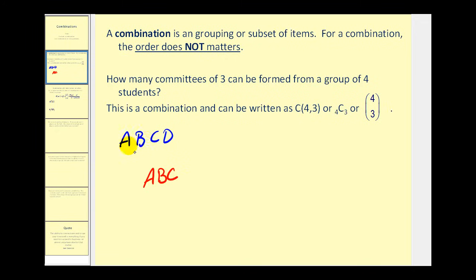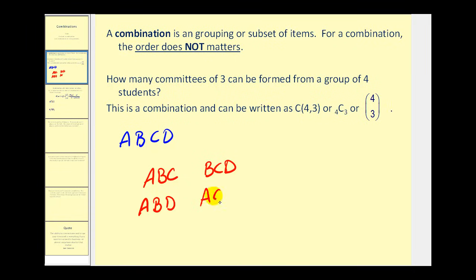So we could select A, B, D as another committee or subset. We could also use B, C, D. And the only other committee we could form would be A, C, D. So if we have four students forming groups of three, there are only four possible outcomes.